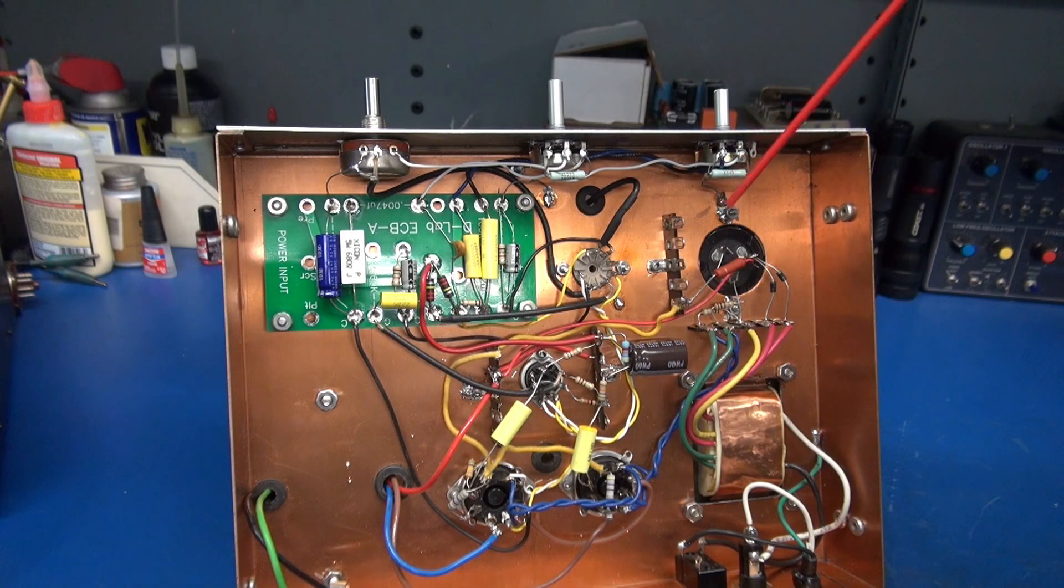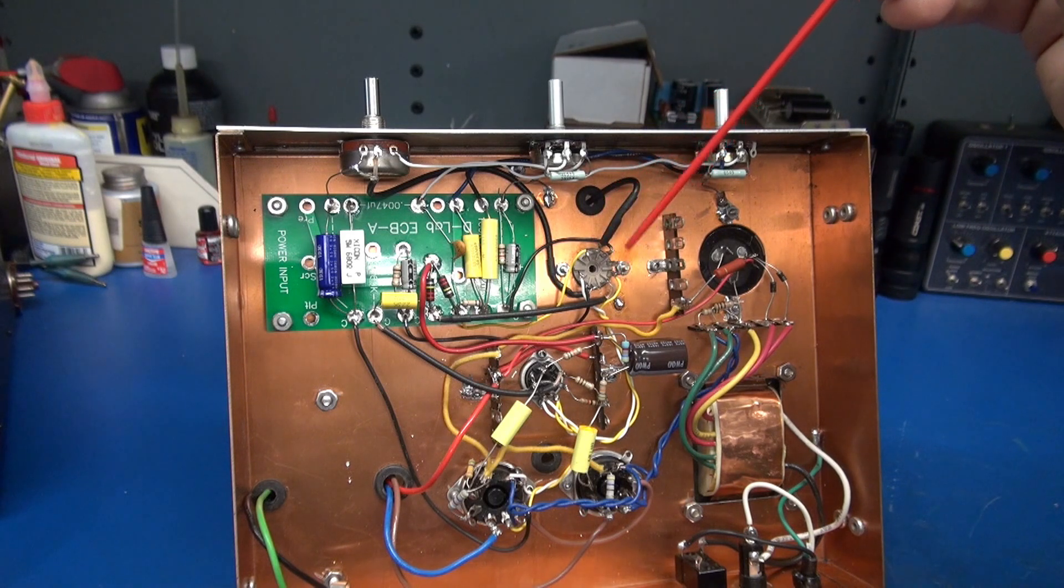Here's an application of the D-Lab ECBA board in a 6V6 push-pull amplifier with separate bass and treble controls.